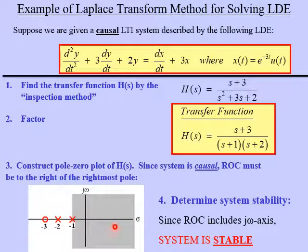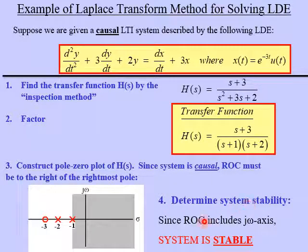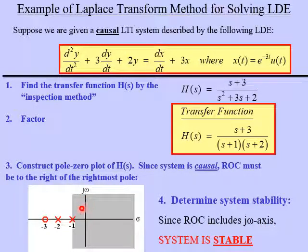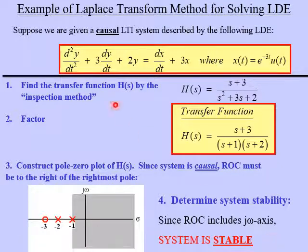The next thing we can do is determine if the system is stable or not. Remember the rule that if the region of convergence includes the jω axis, which it does here, then therefore the system is stable.